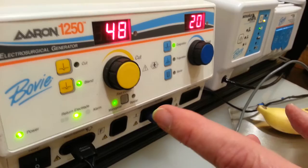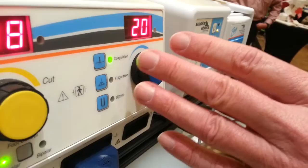I have a blend, which cuts and right behind it, it coags. And then over here on the right side, I have two coag functions.